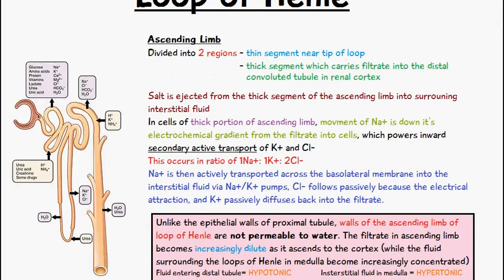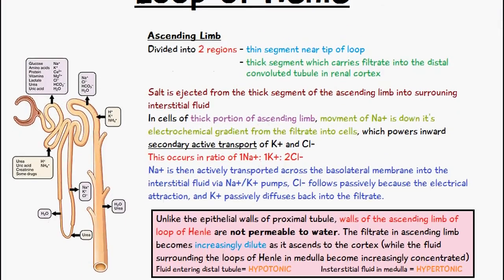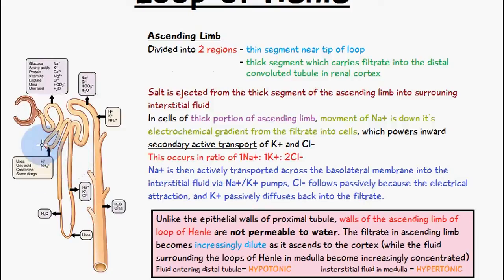We can see this diagram here on the left which shows you the nephron tubule. We can see here is the proximal convoluted tubule, and then when we go down here, this is where we have the loop of Henle. We can divide the loop of Henle into the ascending limb, which goes up, and the descending limb, which goes down.